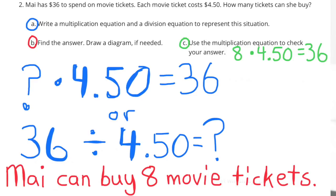8 times $4.50 equals 36. $36 can buy 8 tickets at $4.50 each.